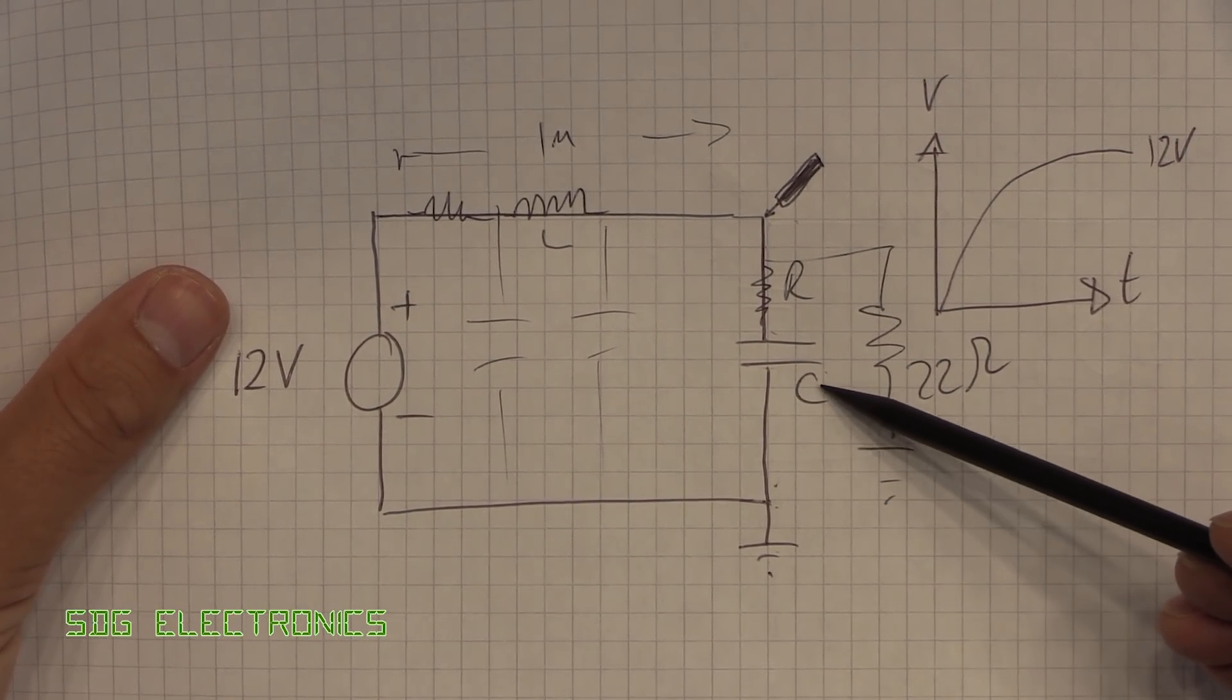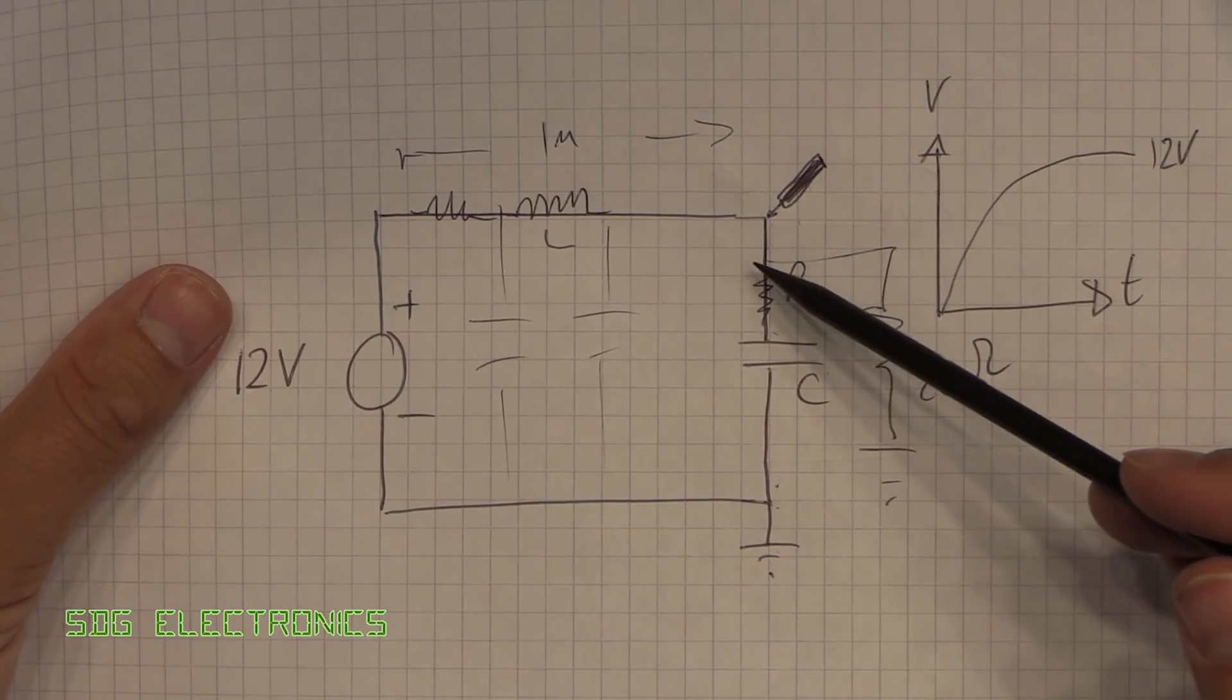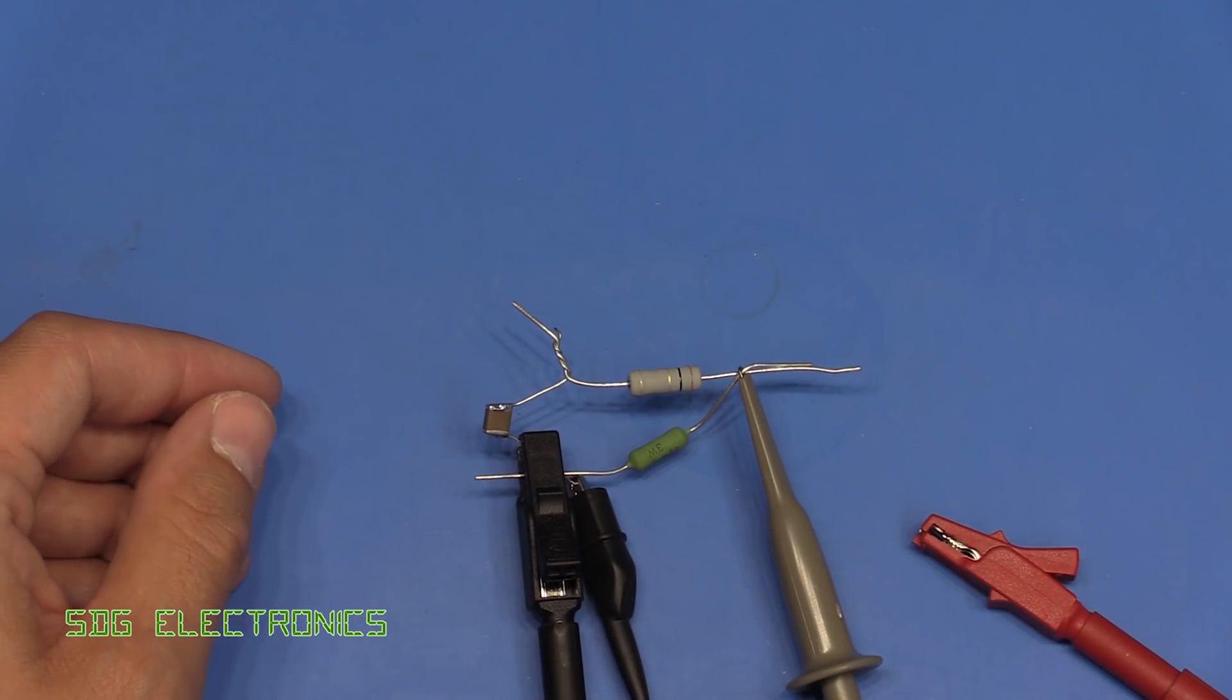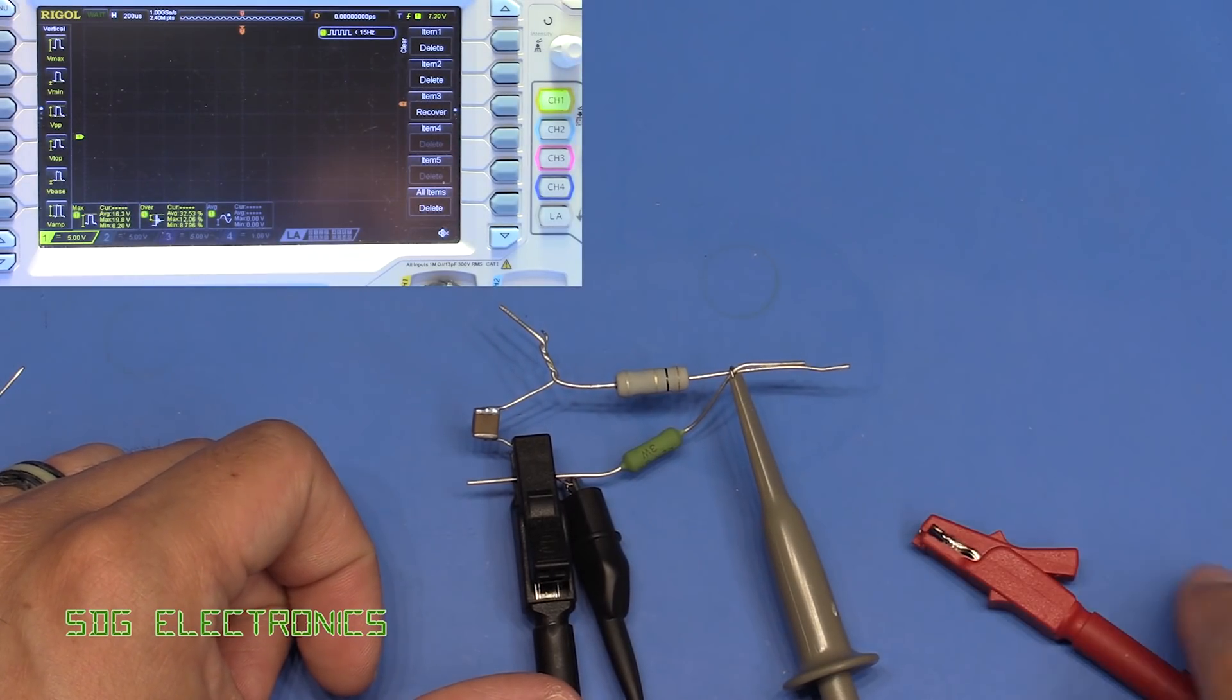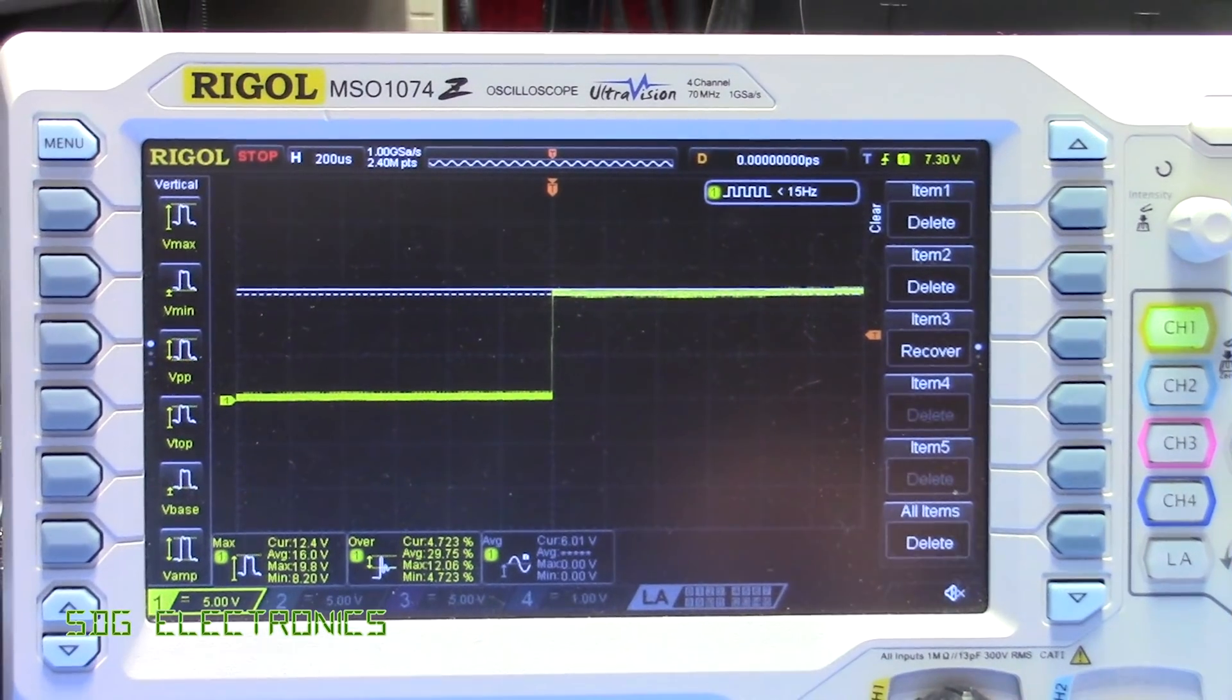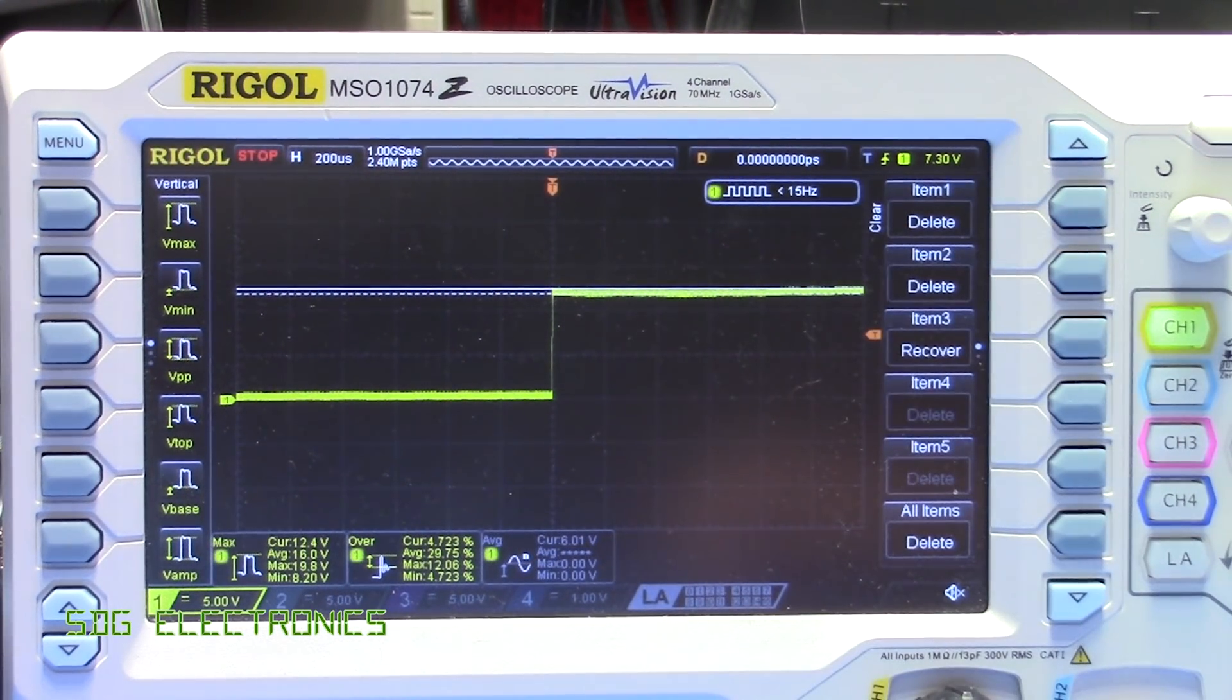I'm just simulating that here. We've got our resistor across the combination of the two. If we apply power again, there we go, we get basically no overshoot on the oscilloscope.